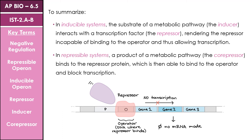Comparing that to our repressible system: the product of our metabolic pathway acts as a co-repressor and binds to the transcription factor — also known as a repressor protein — which is then able to bind to the operator, preventing RNA polymerase from binding and thus blocking transcription.